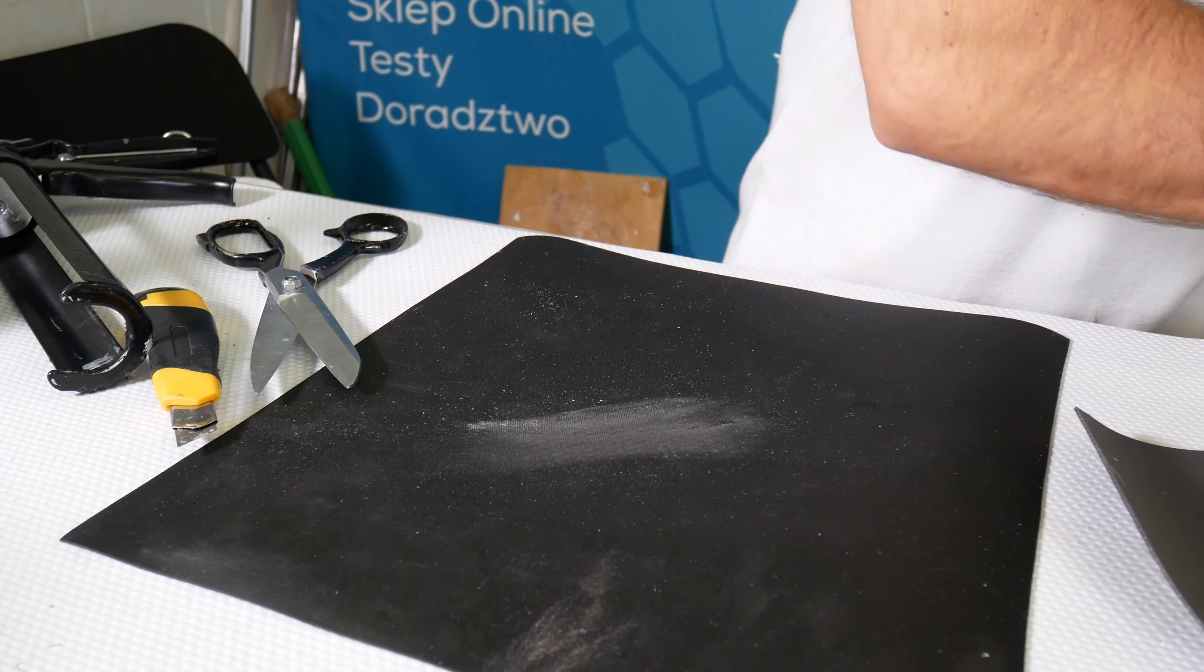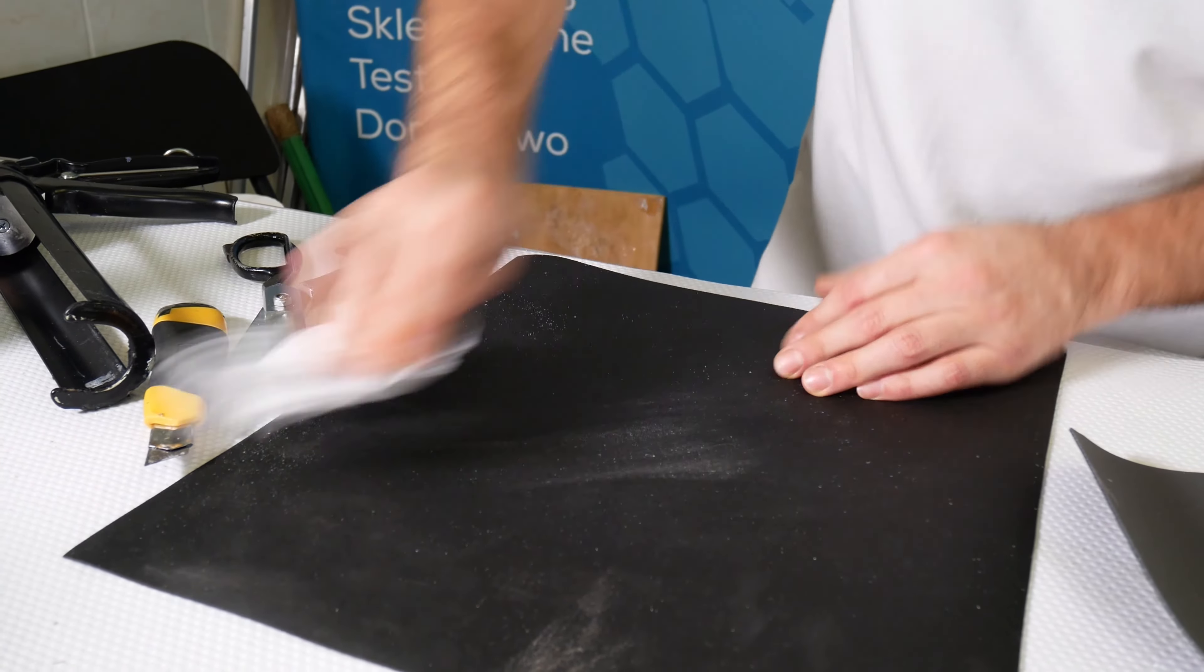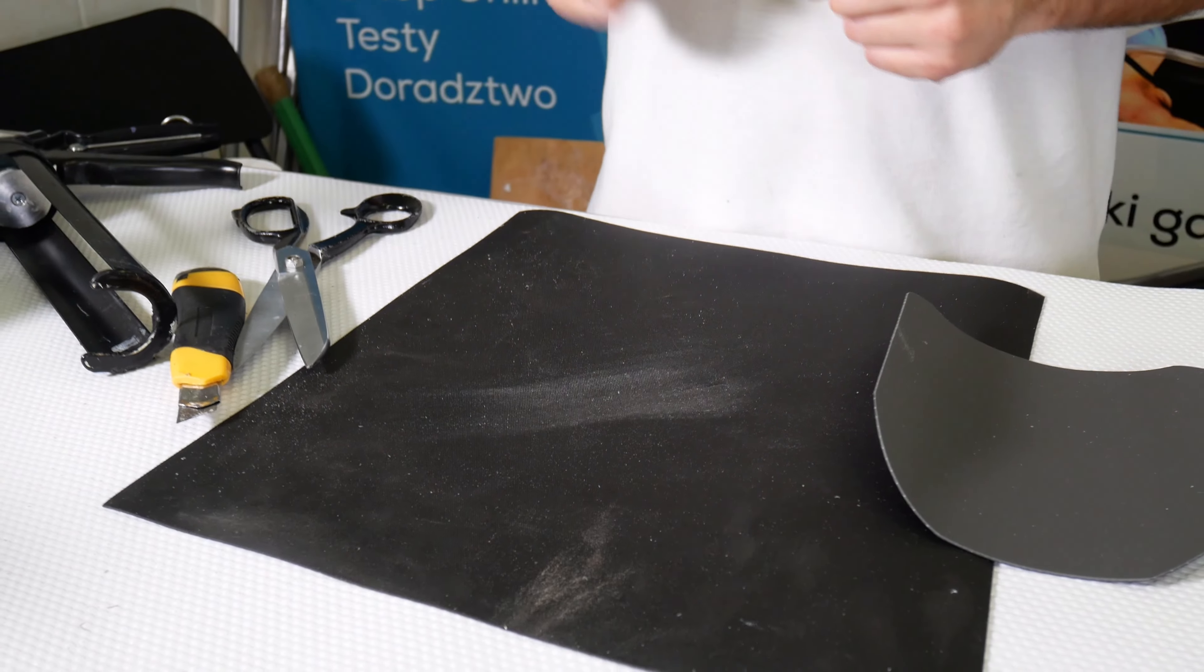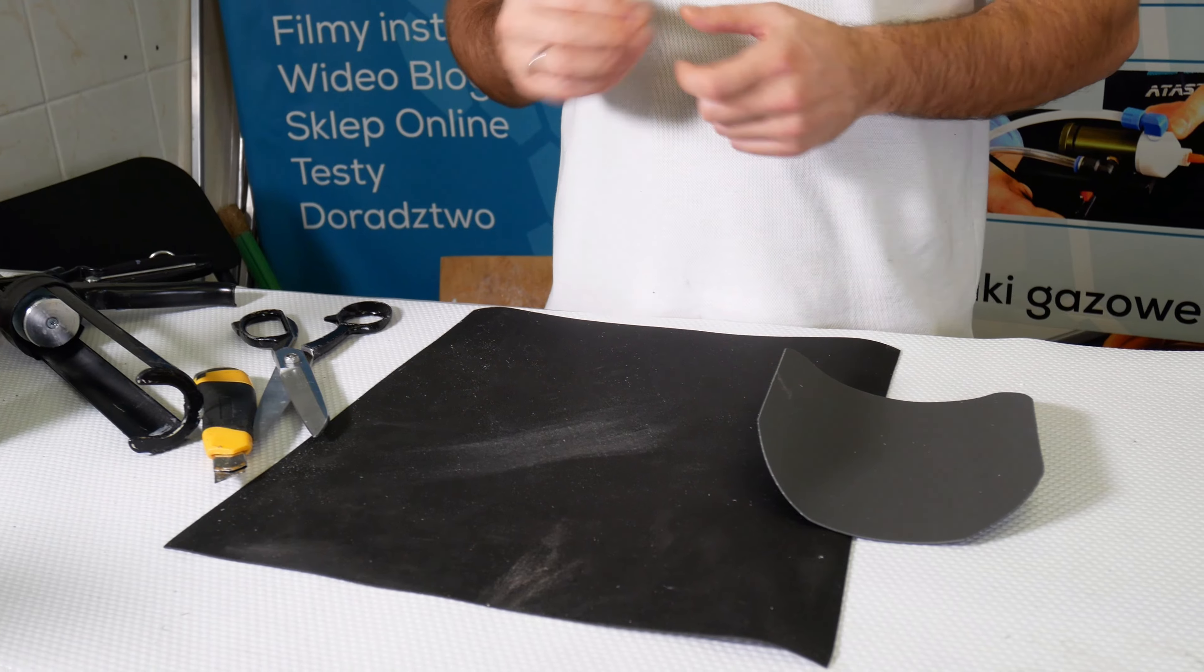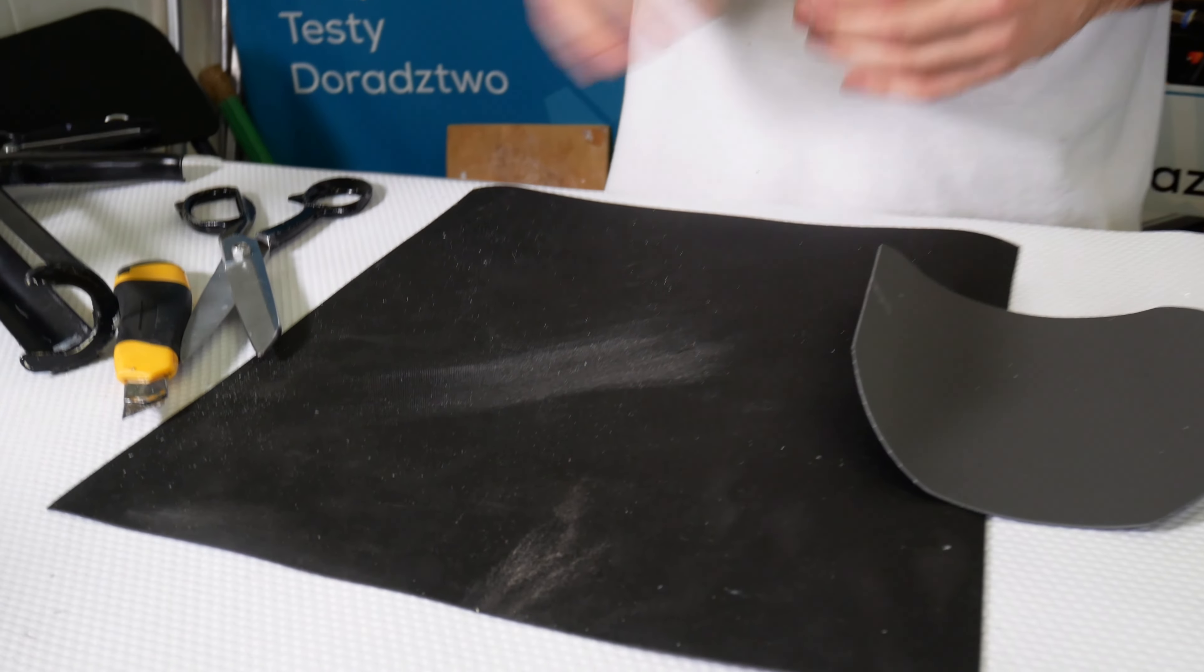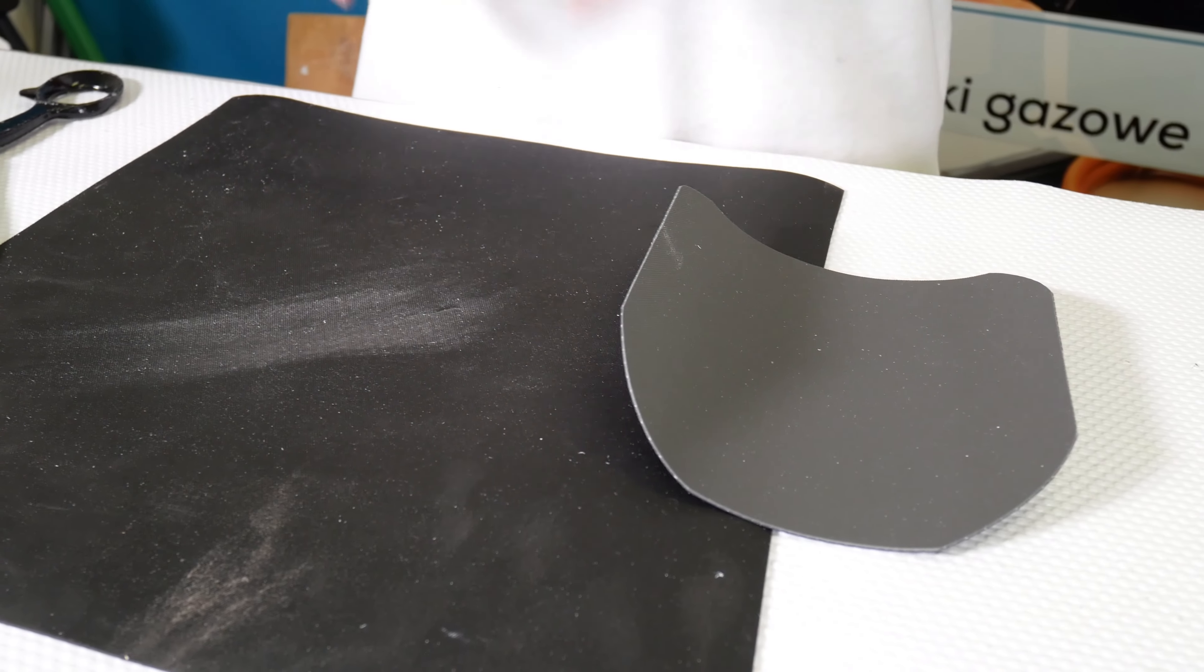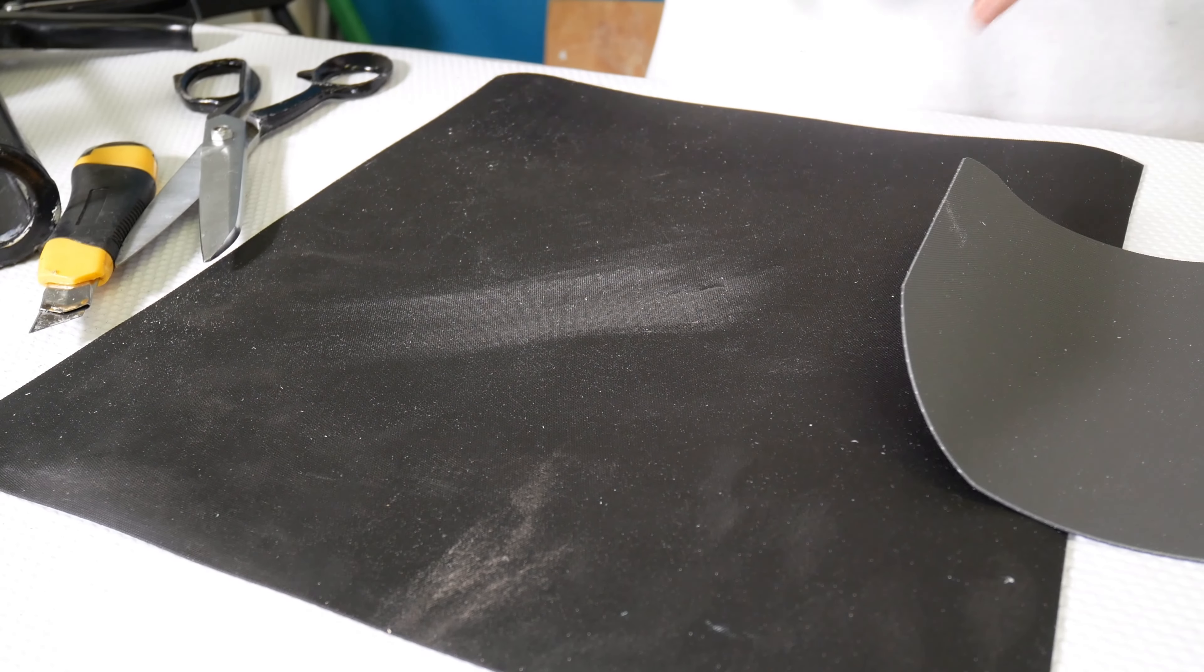Once again degreasing. Now the most important thing is this: this is TPO FPO, which is an EPDM base with polypropylene additives. Each manufacturer has different kinds of additives.